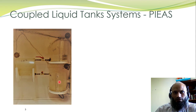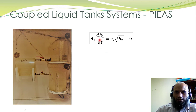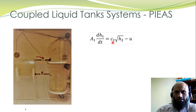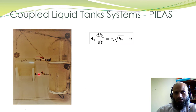Obtaining the mathematical model for Tank 1 and Tank 3 is quite straightforward. For Tank 1, the inflow comes from Tank 2, and this outflow from Tank 2 is proportional to the square root of the level of the liquid inside Tank 2, that is c_2 × √h_2. The proportionality constant c_2 depends upon the cross-sectional area of the pipe, viscosity of the fluid, and the gravitational constant.